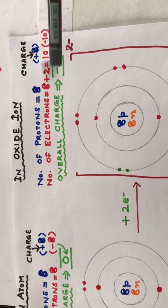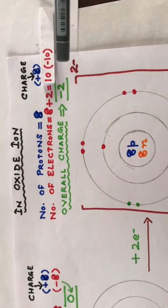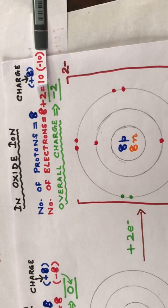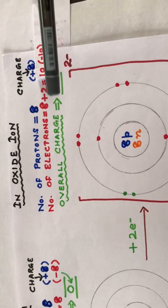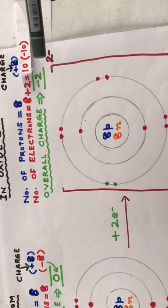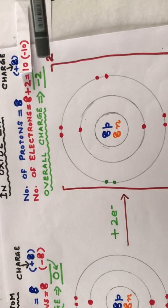The charge on the ten electrons is minus ten. If we total the two charges, plus eight minus ten, the answer that we get is the overall charge on this ion is minus two. We can also write it as 2 minus, both being the same.